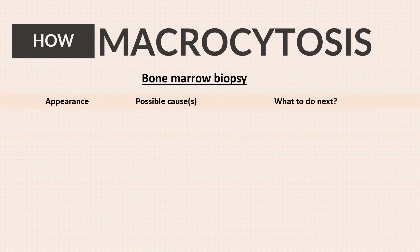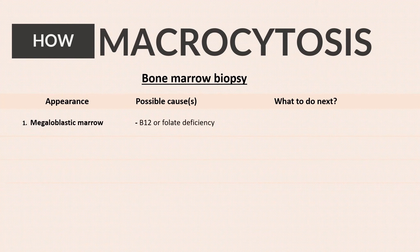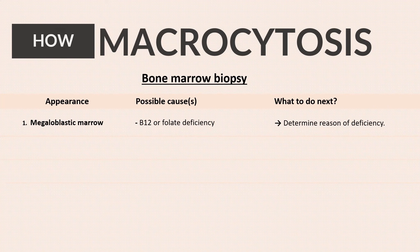Bone marrow is likely to show one of four states. First, megaloblastic marrow, which confirms megaloblastic anemia. Once diagnosed, megaloblastic anemia has its own evaluation, such as determining whether B12 or folate deficiency is the cause, and once the type of deficiency is detected, exploring the reason for the relevant deficiency.